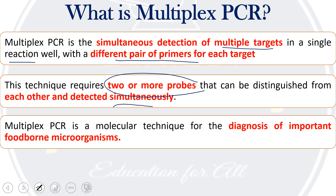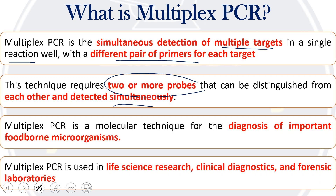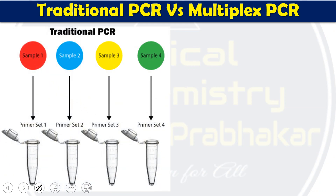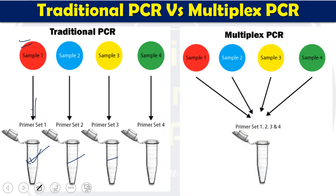Multiplex PCR is a molecular technique used for diagnosis of important foodborne microorganisms, life science research, clinical diagnostics, forensic science, and criminal investigations. Comparing traditional versus multiplex PCR: in the traditional approach, one pair of primers is used per vessel, amplifying one specific DNA target per vessel — so four vessels are needed for four targets. In multiplex PCR, many different primer sets are used in the same vessel, amplifying all four targets simultaneously, and gel electrophoresis produces four separate bands.